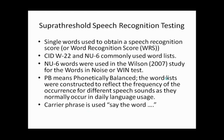Supra-threshold speech recognition testing uses single words to obtain a speech recognition score, also called a word recognition score, speech intelligibility score, or speech discrimination score — all these terms mean the same thing. Commonly used word lists include the CID W22 and the NU6. The NU6 words were used by Richard Wilson in 2007 to create the words-in-noise test, or WIN test. PB means phonetically balanced, and the word lists are constructed to reflect the frequency of occurrence for different speech sounds as they occur in daily language.